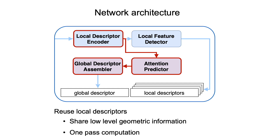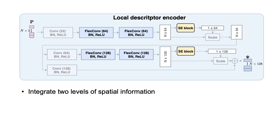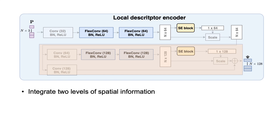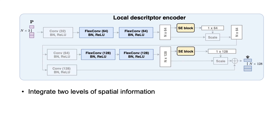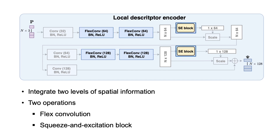Next, we will explain the architecture of each module following the workflow. The local descriptor encoder takes point clouds as input and outputs the point-wise local descriptors. We integrate the spatial information at two levels. The second level is employed to encode the structure from a larger receptive field than the first one. To make the descriptors more discriminative, we adopt two special operations: flex-convolution and the squeeze-and-excitation block.